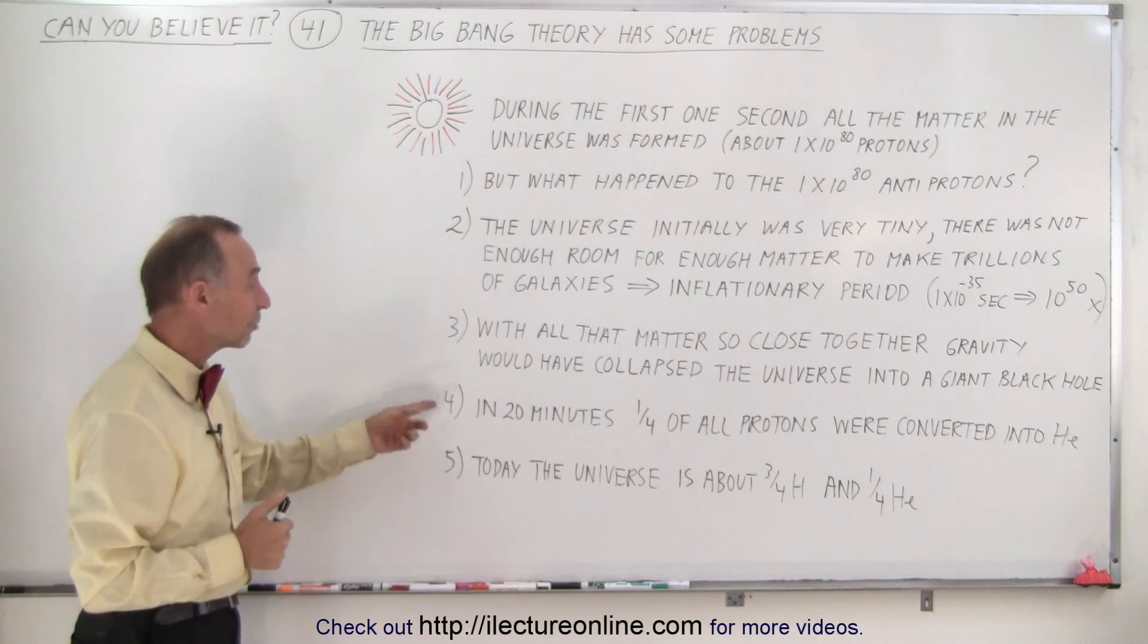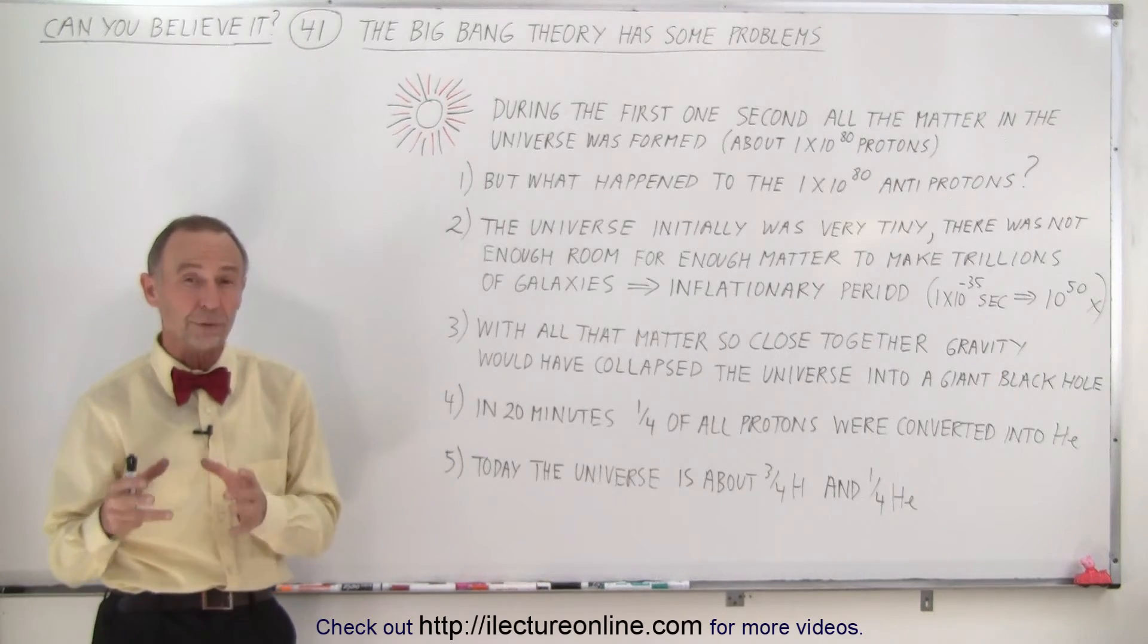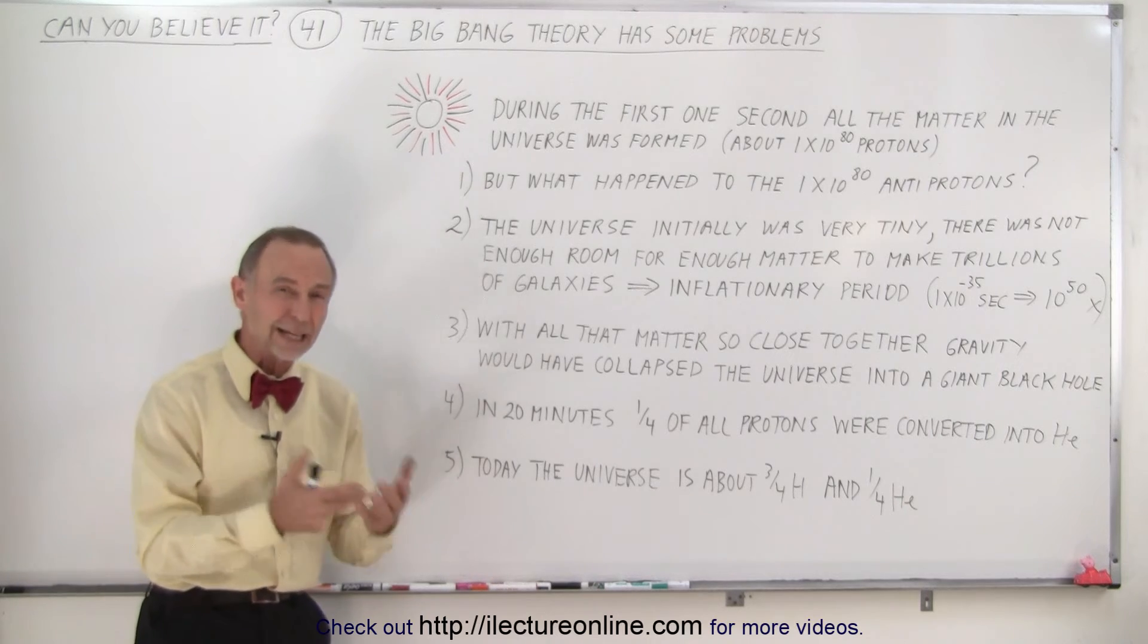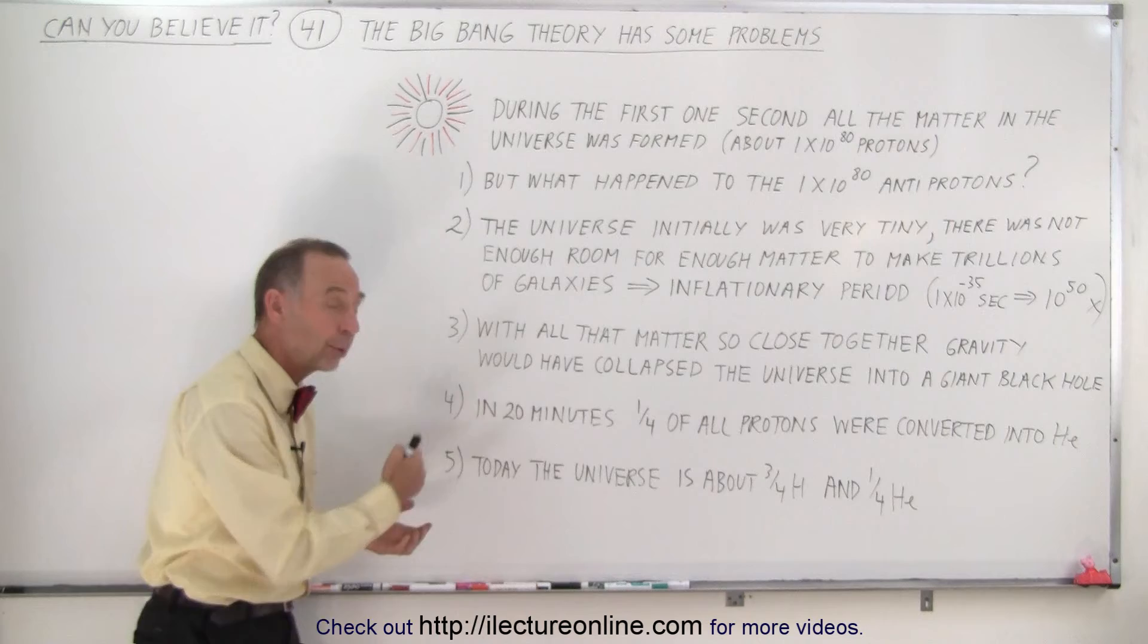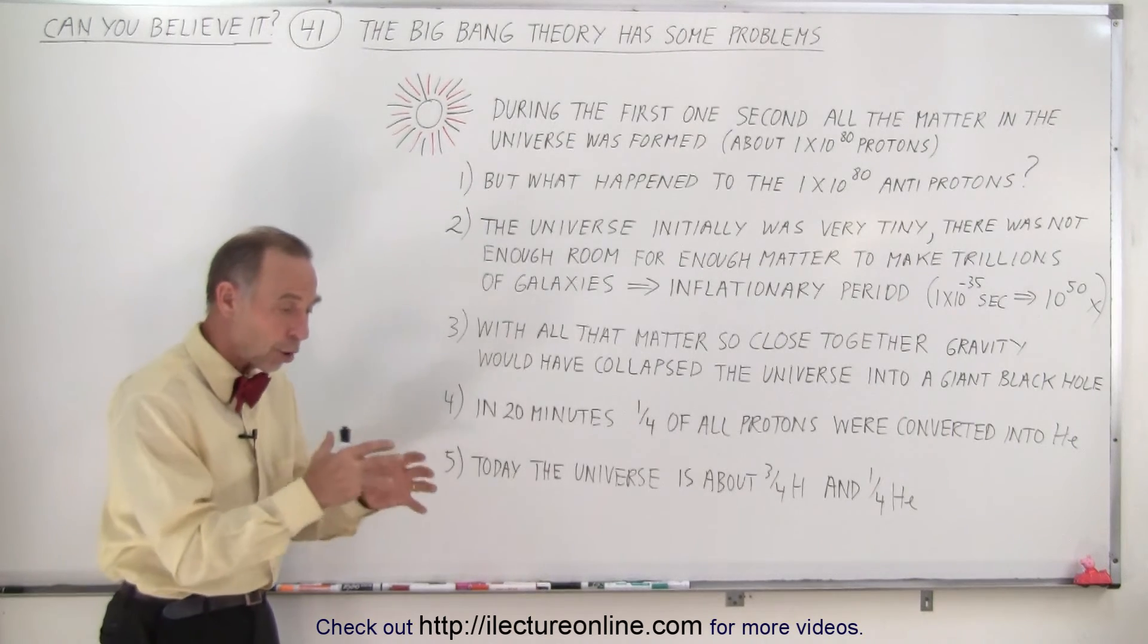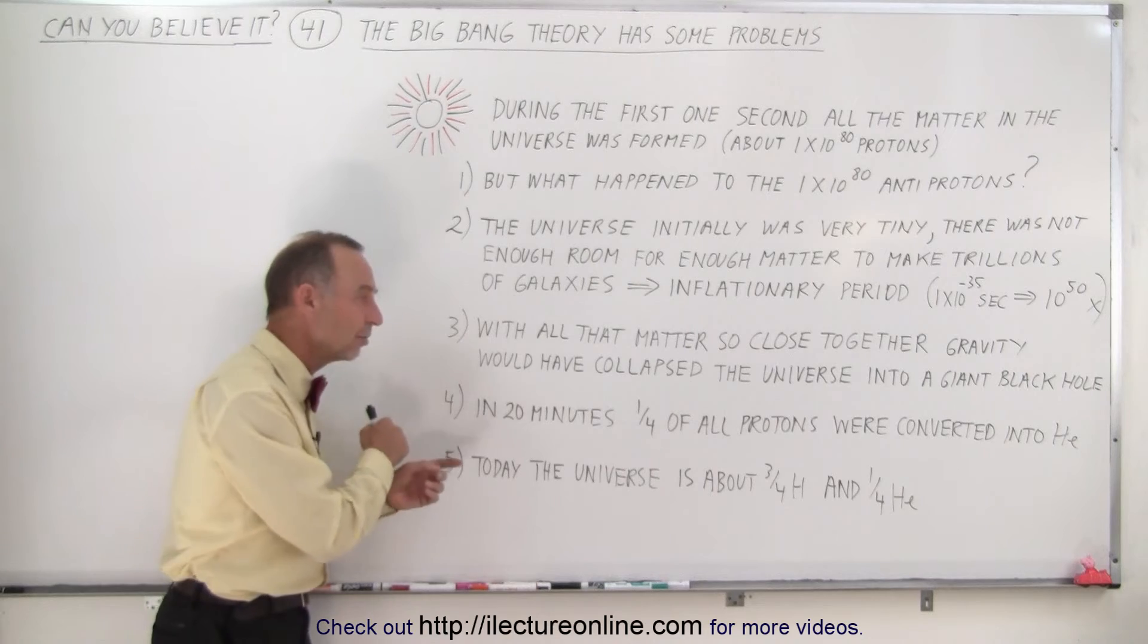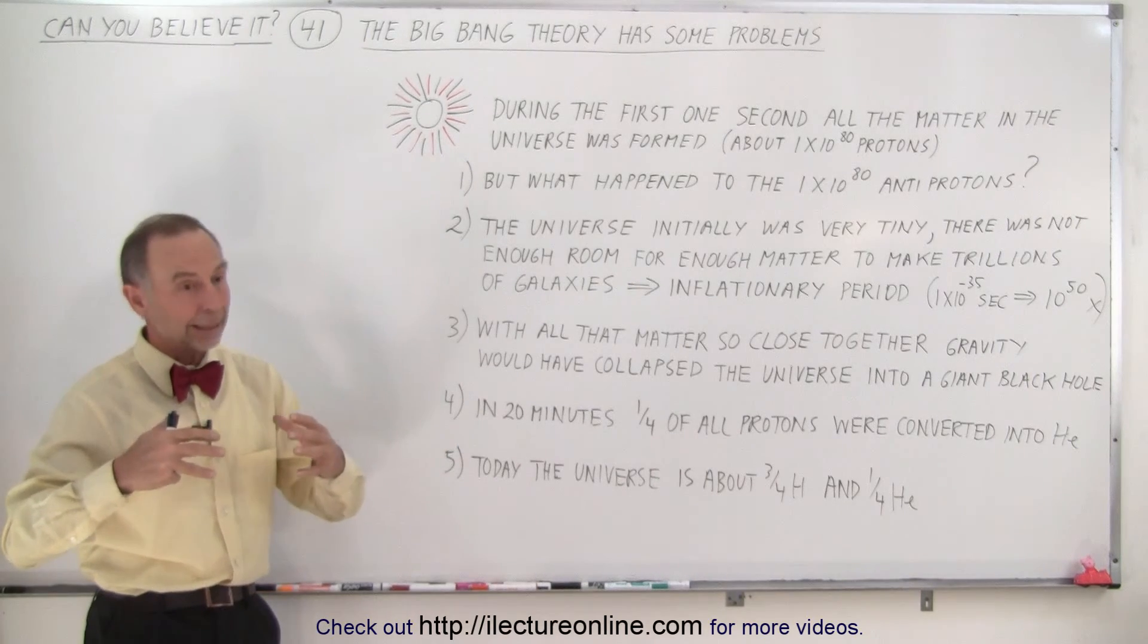Then they said that in the next 20 minutes, about one quarter of all the protons that were formed had been converted through nuclear fusion into helium. Kind of what happens at the center of stars. But it would have happened very quickly, because stars take millions, if not billions of years to do so. Our Sun will take about 10 billion years to turn all the hydrogen in its core into helium, but they claim that in 20 minutes, one quarter of all the hydrogen had turned into helium.